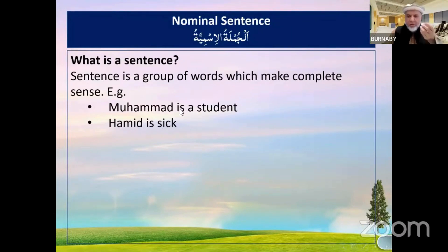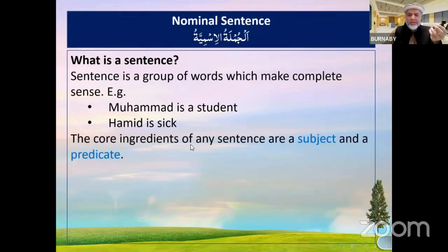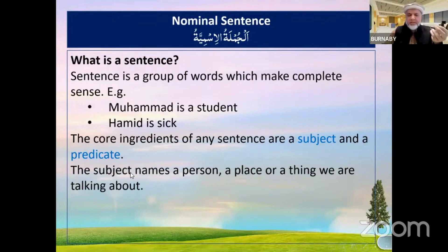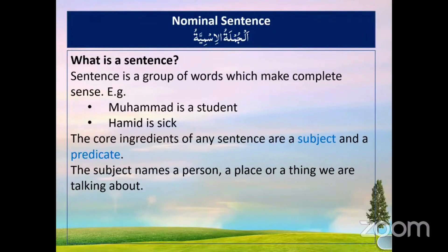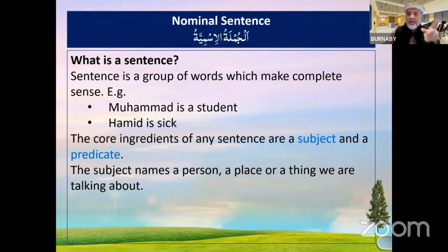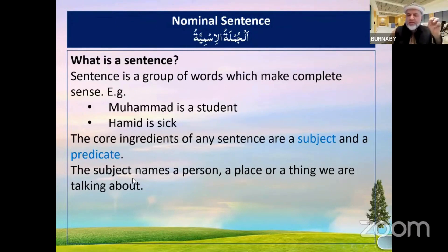The word 'is' is the glue which makes it a complete sentence. The core ingredients of any sentence are a subject and a predicate. The subject names a person, a place, or a thing. Now, is the subject supposed to be a noun? Yes — because we are dealing with the nominal sentence, the subject is the starting noun.